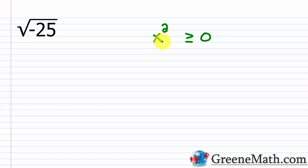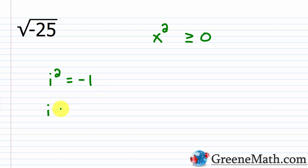In order to deal with this scenario where we're taking the square root of something like negative 25, we introduce the imaginary unit i. The definition of i is usually given as i squared is equal to negative one. So this is now a number that when squared gives us a negative — specifically negative one. You may also see that i is defined as the square root of negative one, which just comes from taking the square root of both sides: the square root of i squared gives i, and the square root of negative one gives the square root of negative one.